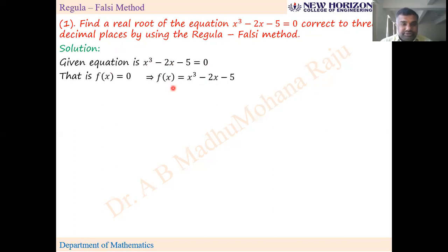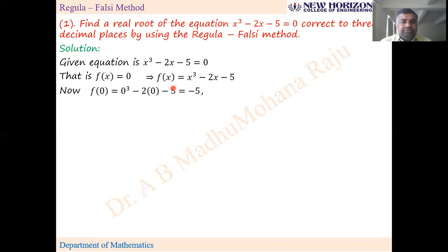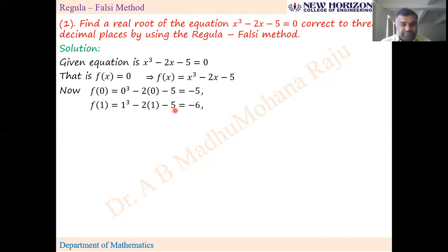After defining that function, we have to find out two points by trial and error method. We will start from 0 or 1. f(0) = −5, f(1) = −6, f(2) = −1 — still negative. f(3) = 16.